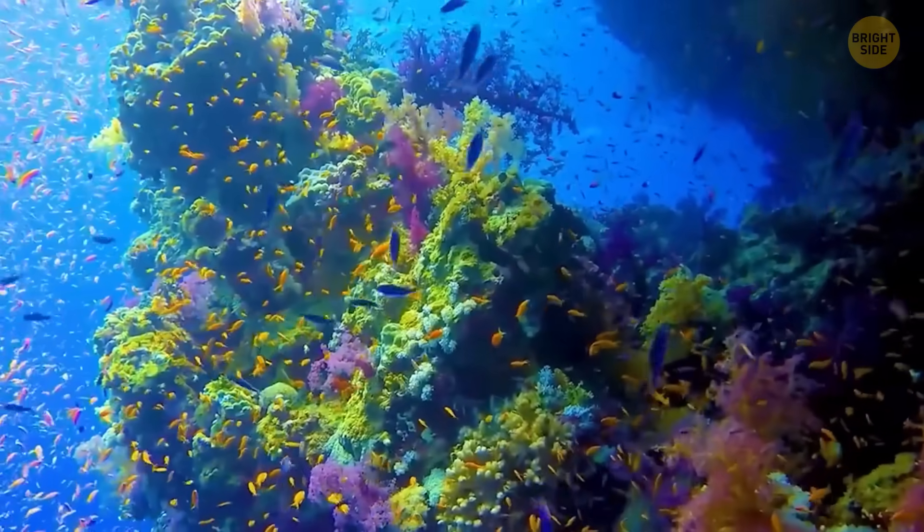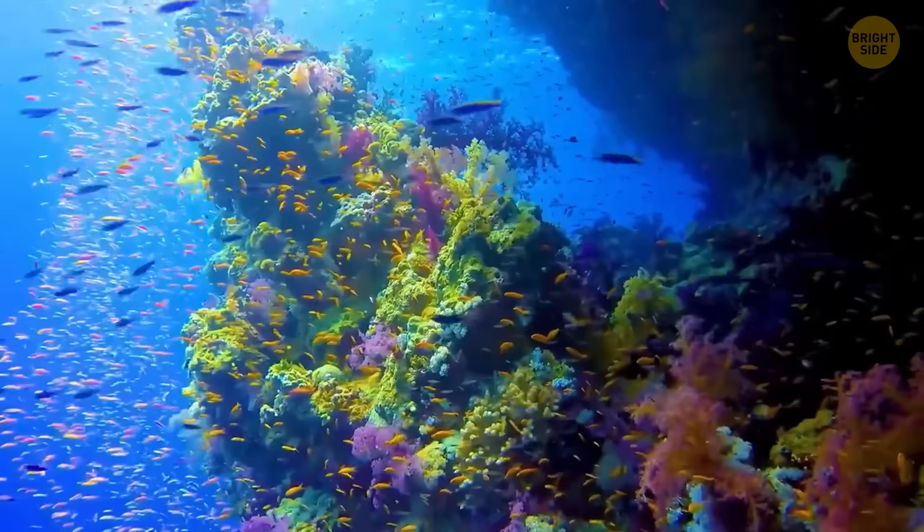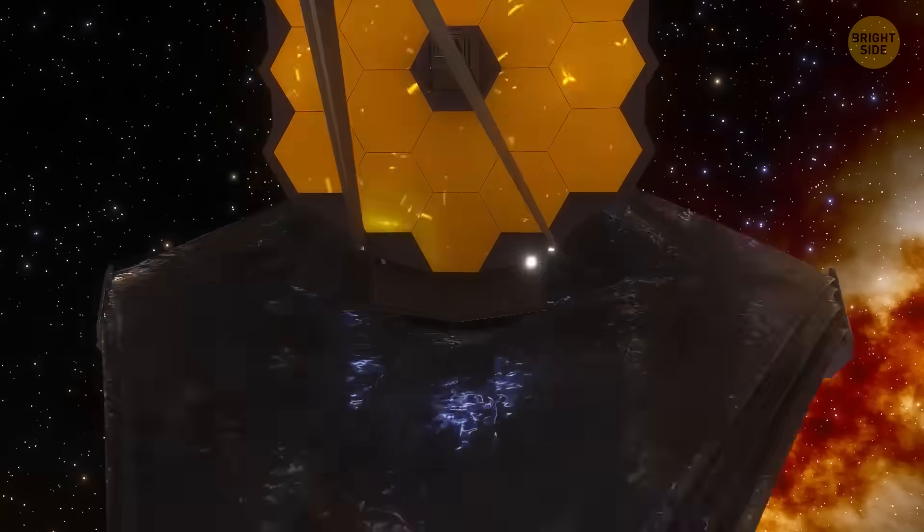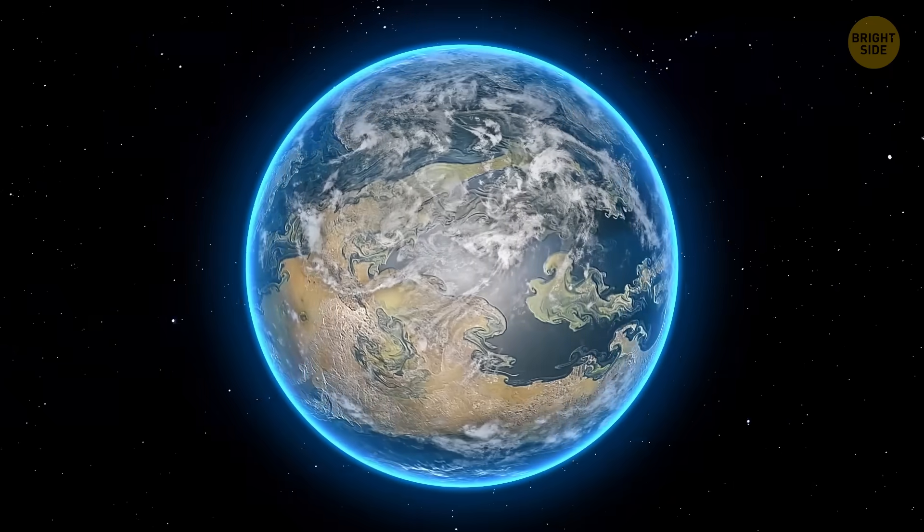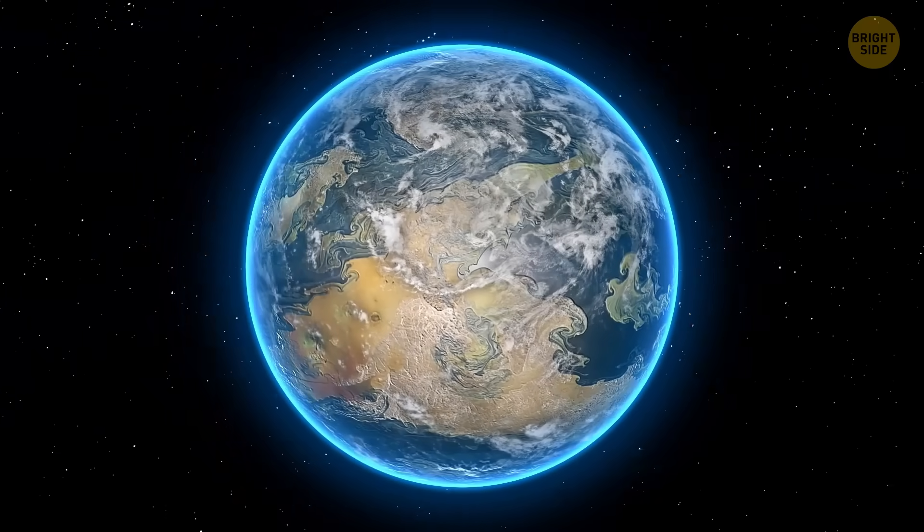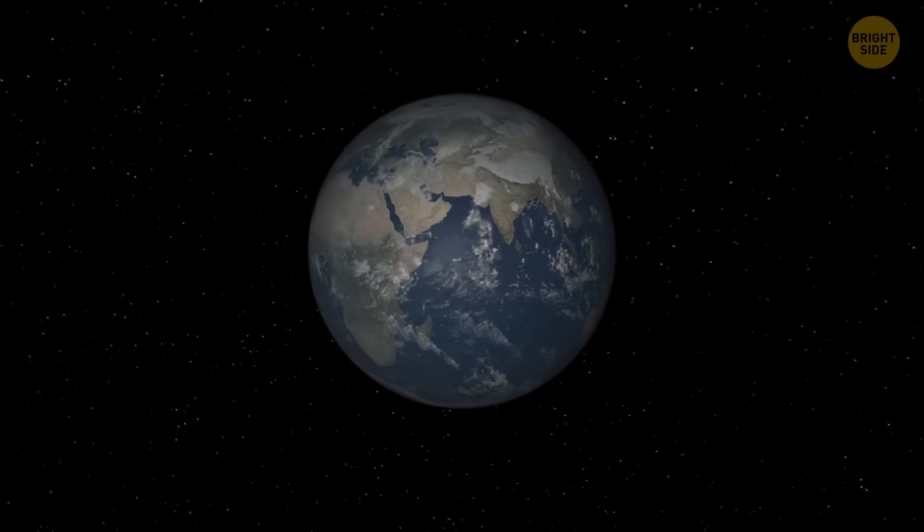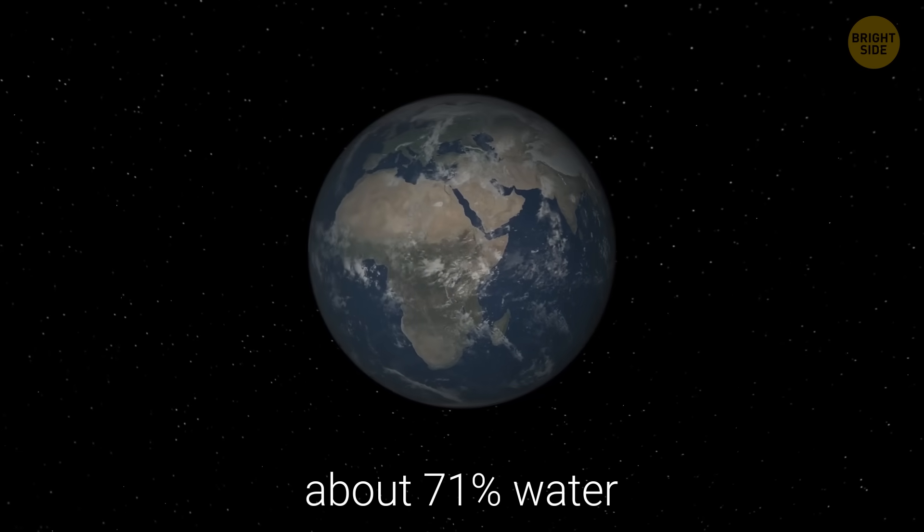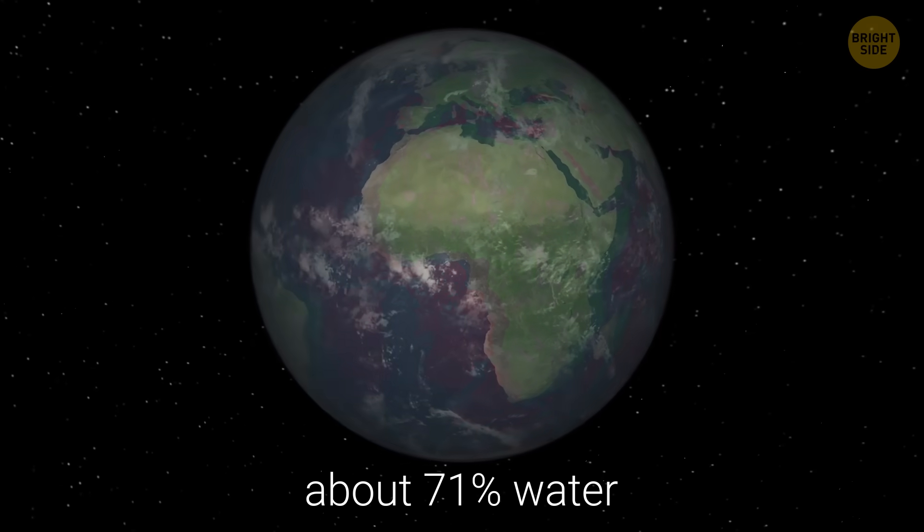First things first, we all know that water is essential for life. That's why scientists search for water on other planets to find potential life. On our own planet, water covers about 71% of its surface, with most of it found in the oceans.